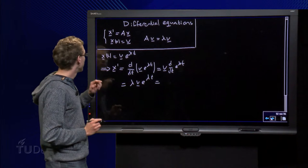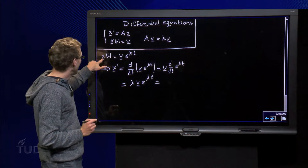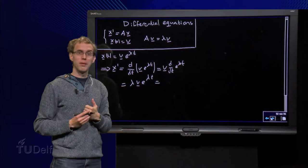Because how does it look? Let's try a solution x of t equals v times e to the power lambda t.